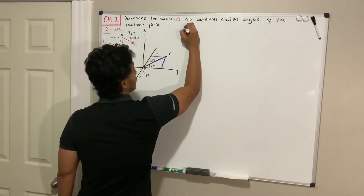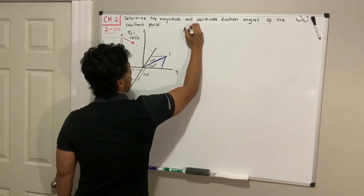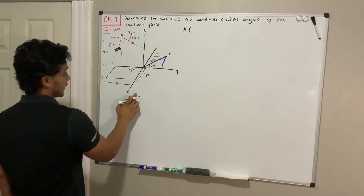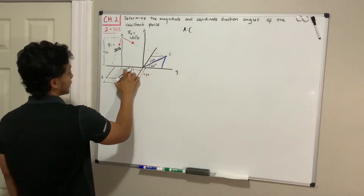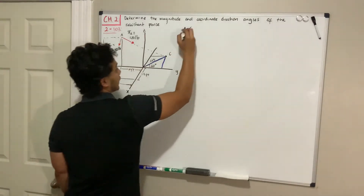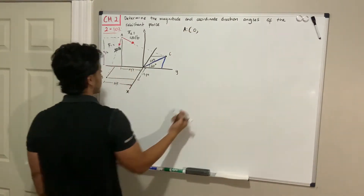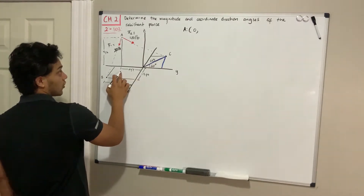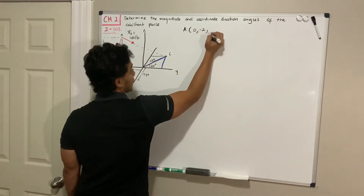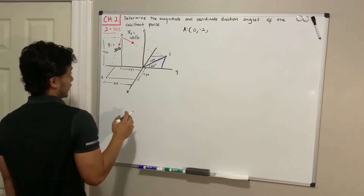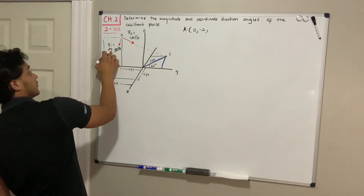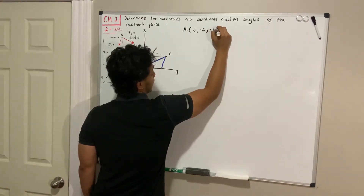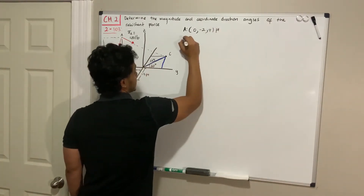Let's start by locating point A. In the x-direction, A has nothing because it's at the origin, so x = 0. In the y-direction, it has 2 going to the left, so it's negative 2. In the z-direction, it has positive 4 because it's going 4 up. So A is at (0, -2, 4) feet.